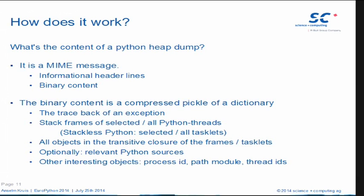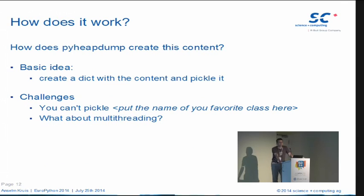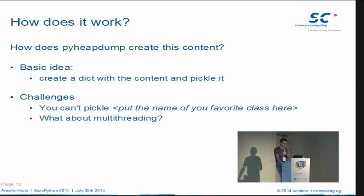Optionally, you can also include the sources of code objects from all frames, process IDs, and path information for modules. The path information is useful if you create a dump on a Linux system and analyze it on a Mac or Windows system — you need to know how to interpret the paths and file names of source code files in the code objects. The basic idea of creating this content is very simple: create a dictionary with the content and pickle it. The challenge is that you can't pickle almost all classes — the kind of data that is pickleable in Python is fairly limited.